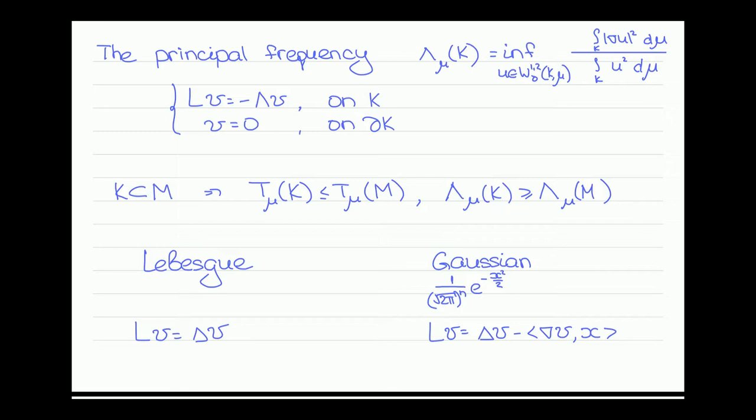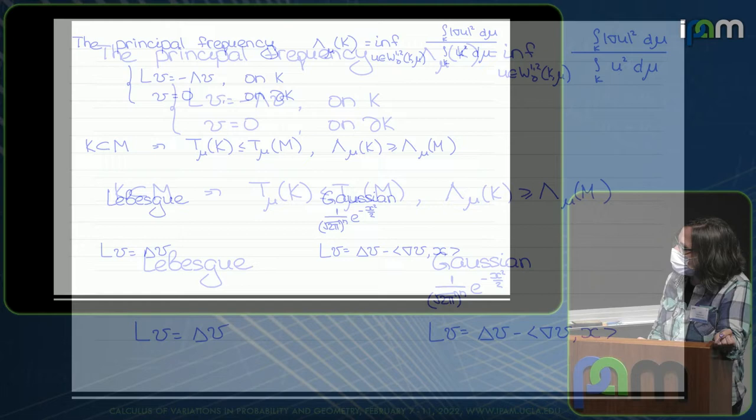Both torsional rigidity and principal frequency possess the monotonicity property. So if we have two sets where K is a subset of M, then torsional rigidity will be maximized for M and minimized for the principal frequency.